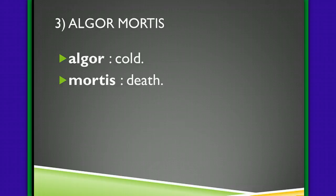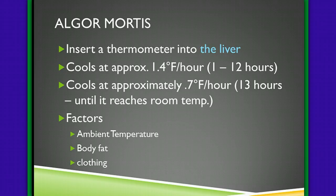Algor mortis refers to cold upon death — this is the change in body temperature. Typically, the coroner inserts a thermometer into the liver to take the temperature. The body cools at approximately 1.4 degrees Fahrenheit per hour in the first 12 hours after death, and we can do a calculation based on the liver temperature to determine how long prior the body ceased life.